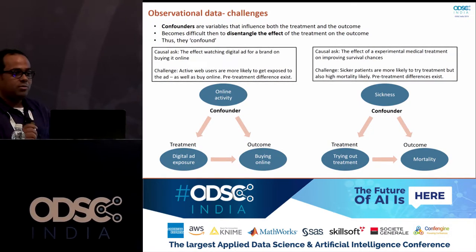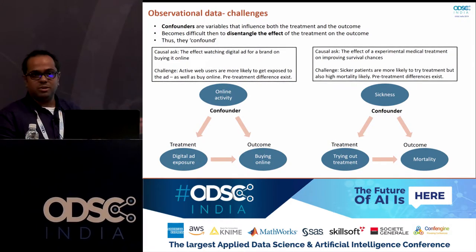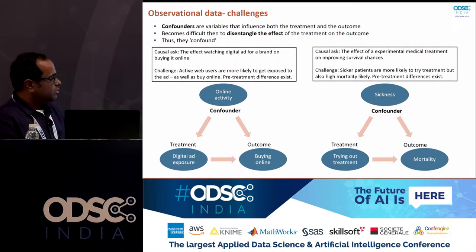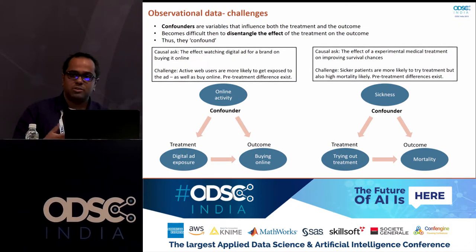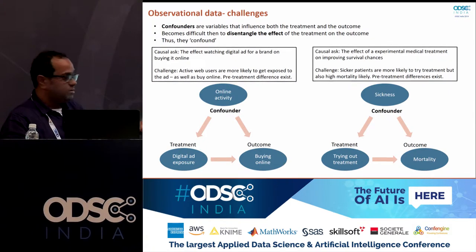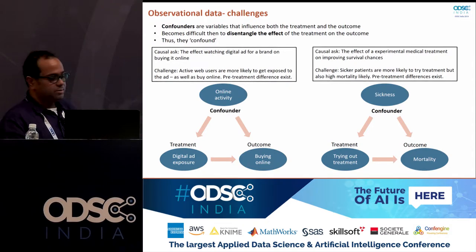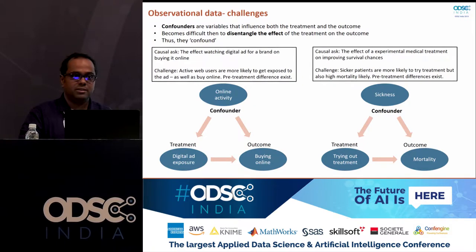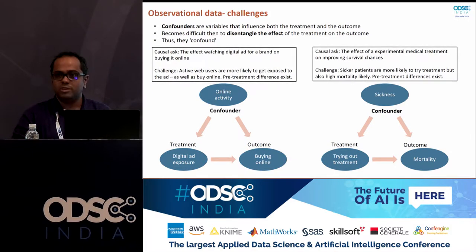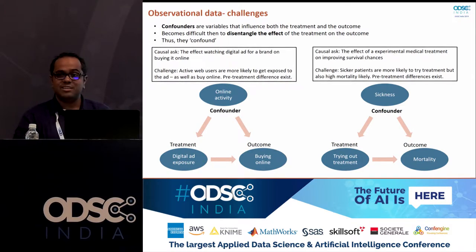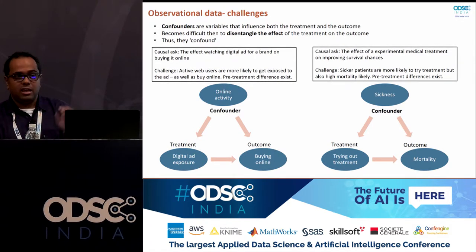We have covered confounders before — the economic state of the country was a confounder in the Nobel Prize example. In medical sciences, assume you come out with an experimental treatment — folks who try the treatment may also be the sickest ones. The state of sickness may affect both trying out the treatment and the mortality rate, making it difficult to tease out the effect of treatment on mortality. So synopsizing: A-B testing is the gold standard, but not always possible; you will be left with observational data; observational data has the principal problem of confounders, meaning pre-existing differences between the treated and non-treated side.